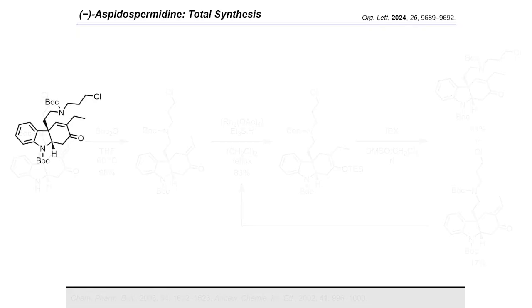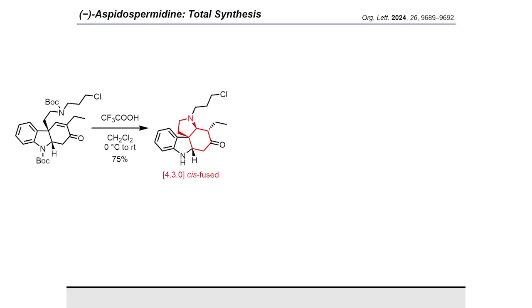With the desired endoenone in hand, we turned our efforts to the construction of the D and E rings. N-deprotection and concomitant azomethine addition proceeded in the presence of trifluoroacetic acid, furnishing the tetracyclic product as a single diastereomer. Upon construction of the D-ring, a 6-5-6-fused system was again formed, thus rationalizing the observed cis-stereochemistry.